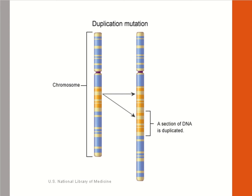We didn't go over the duplication mutation earlier, but here is a normal chromosome on the left, and this region has gotten doubled — it's been duplicated, as you can see.